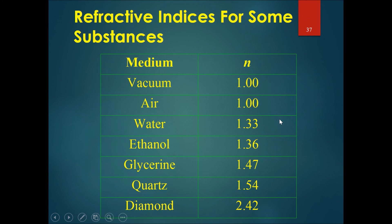For reference, here are some refractive indices for various substances: vacuum and air are both 1.00, water is 1.33, ethanol is 1.36, glycerine is 1.47, quartz is 1.54, and diamond is 2.42. Diamond has one of the highest refractive indices.